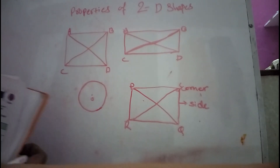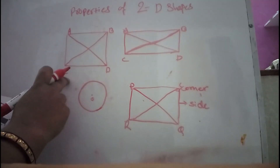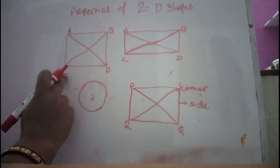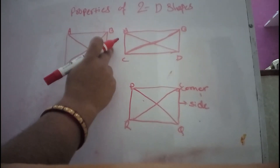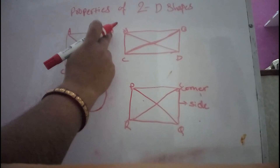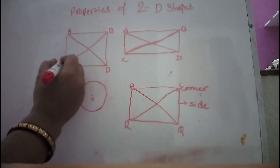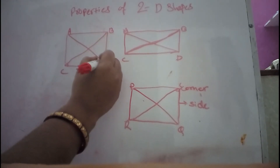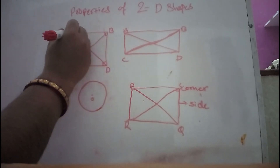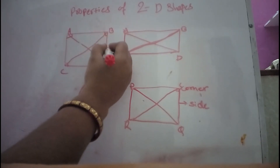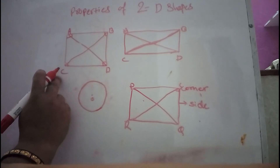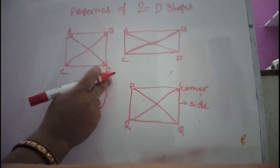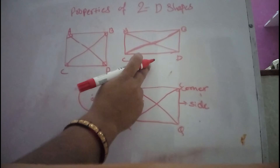Let us look at the square in this figure — which is the diagonal, which is the side, and which is the corner? This is corner C, corner D, corner B and corner A. This is the side, and the diagonals are CB and AB.